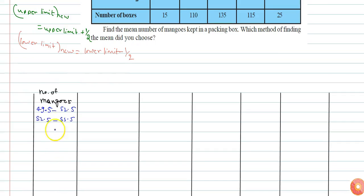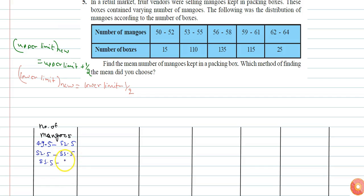Similarly, 55.5 to 58.5, 58.5 to 61.5, 61.5 to 64.5. So xi now I can calculate. Xi is given by upper limit plus lower limit by 2, or I can say average of the interval. So it will be 51, here it will be 54.